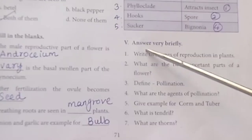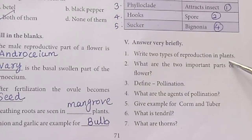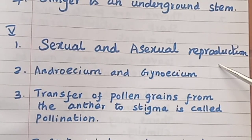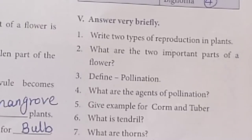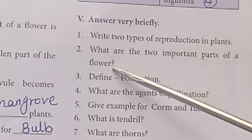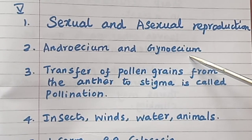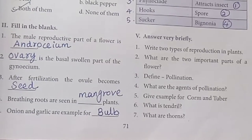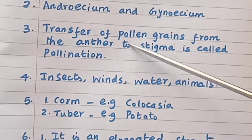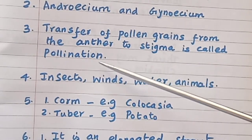Answer very briefly. Write two types of reproduction in plants: Sexual and asexual reproduction. What are the two important parts of a flower? Androecium and gynoecium. Define pollination: Transfer of pollen grains from the anther to the stigma is called pollination.